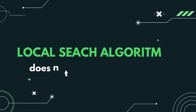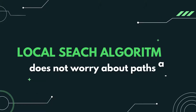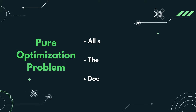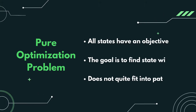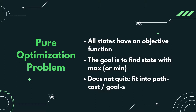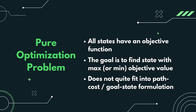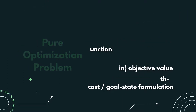In such cases, a local search algorithm is used, as it does not worry about paths at all. It's particularly useful for pure optimization problems — these are problems where all states have an objective function, the goal is to find the state with maximum or minimum objective value, and it does not quite fit into the standard goal state formulation.